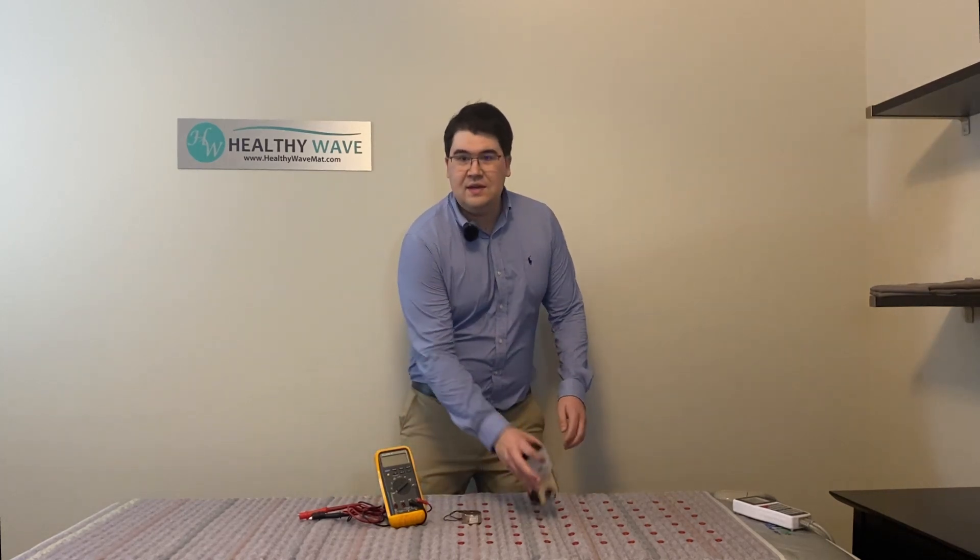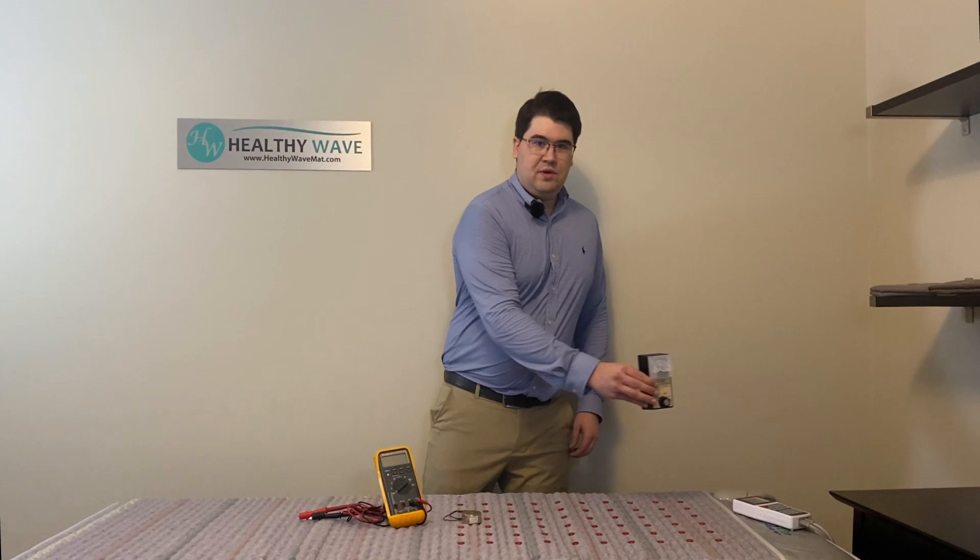All you really need to understand is there are a few key variables that affect this. Number one, the magnetic flux. This is simply the intensity of the PMF. We can measure this with our gauss meter, where you can see the magnetic field is pulsing right now. As you can see, we are getting magnetic flux through the entire mat and several feet above it.